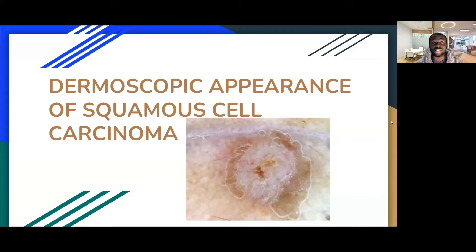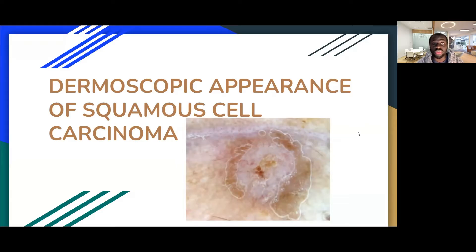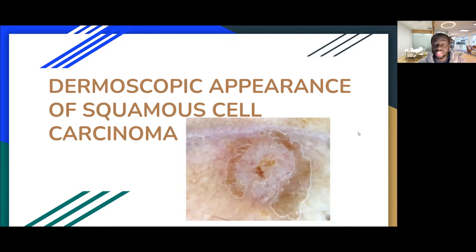Other common malignancies are basal cell carcinomas and melanomas. Squamous cell carcinoma is usually a keratinizing lesion, as we know. It could present as an ulcerative lesion, it could present as an area of redness or erythema, it could present as a raised lesion or even an area of keratinization.